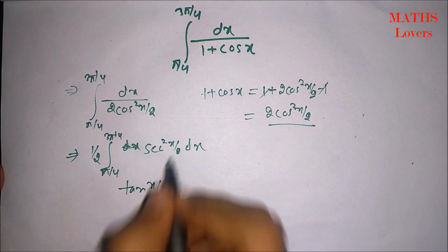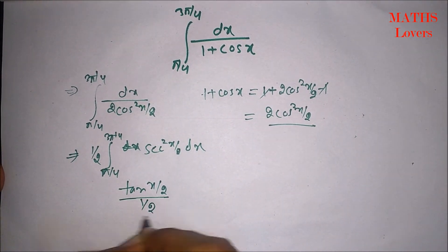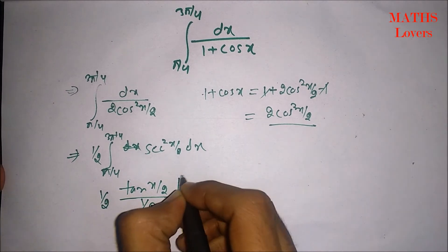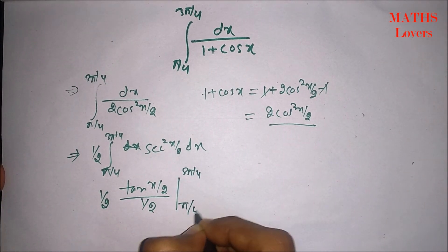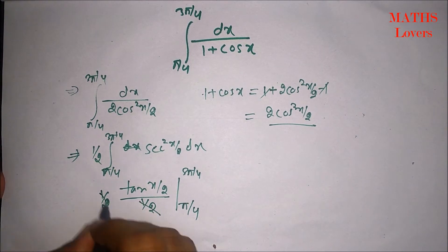So, tan x by 2, coefficient of x is 1 by 2. So, we have to divide it by 1 by 2. Again, 1 by 2 is here. The limit is 3 pi by 4 to pi by 4. So, 1 by 2 is cancelled out.